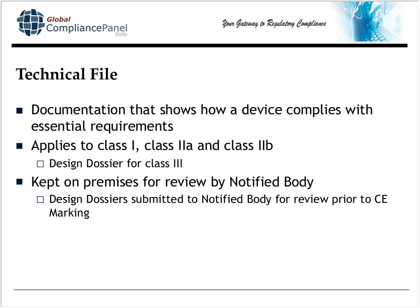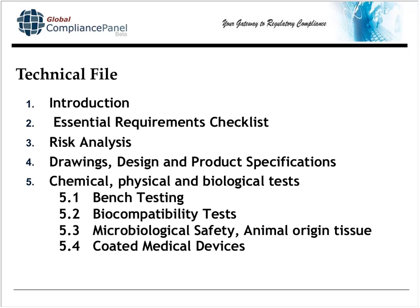The technical file is a document that shows how your device complies with the essential requirements. It applies to three classes: Class 1, 2A, and 2B. For Class 3 design dossiers, it's the same contents as the technical file, but you submit them to your notified body prior to getting your CE marking, whereas your technical file you just keep and they review it during their notified body audits. The structure of the technical file begins with an introduction, then the ER checklist, then a risk analysis, followed by the more technical aspects of the device — drawings, design specifications, product specifications — then all of the chemical, physical, and biological tests, and then the clinical data.